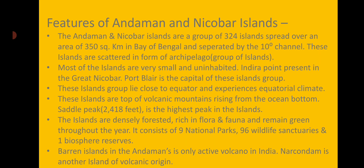Now the features of Andaman and Nicobar: the Andaman and Nicobar Islands are a group of 324 islands spread over an area of 350 square kilometers in the Bay of Bengal, and separated by the 10-degree channel. These islands are scattered in the form of an archipelago, meaning a group of islands.